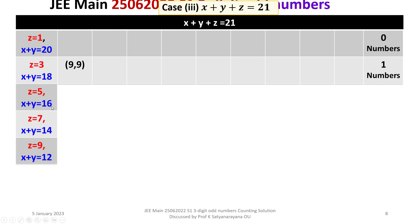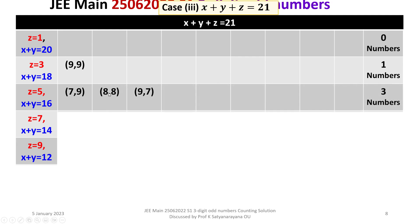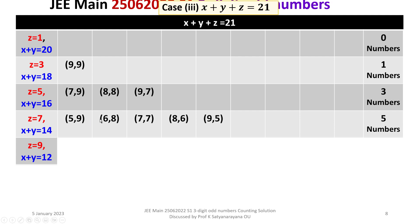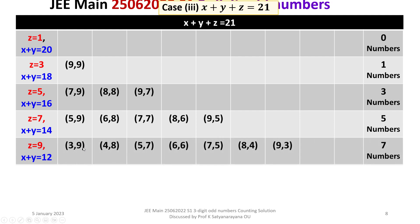For z equal to 7, x plus y equals 14, giving: 5,9; 6,8; 7,7; 8,6; 9,5 — that is 5 numbers. For z equal to 9, x plus y equals 12, giving: 3,9; 4,8; 5,7; 6,6; 7,5; 8,4; 9,3 — that is 7 numbers. So the subtotal for Case 3 is 0 plus 1 plus 3 plus 5 plus 7, which is 16. The number of 3-digit odd numbers whose sum of digits is 21 is 16.